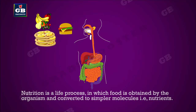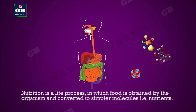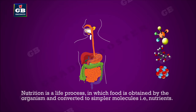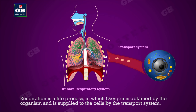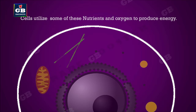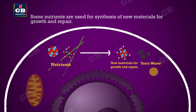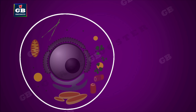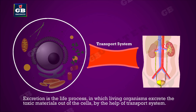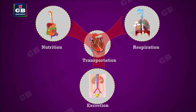Nutrition is a life process in which food is obtained by the organism and converted to simpler molecules — nutrients — which are supplied to cells by the transport system. Respiration is a life process in which oxygen is obtained by the organism and supplied to cells by the transport system. Cells utilize nutrients and oxygen to produce energy, and some nutrients are used for synthesis of new materials. Cells generate toxic molecules which must be excreted. Excretion is the life process in which living organisms excrete toxic materials out of the cells via the transport system. Transportation is the life process that helps transport materials in nutrition, respiration, and excretion.